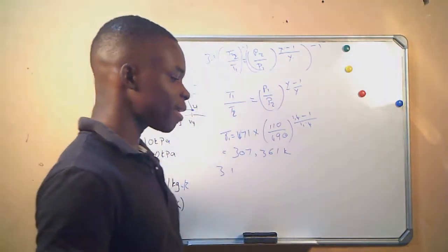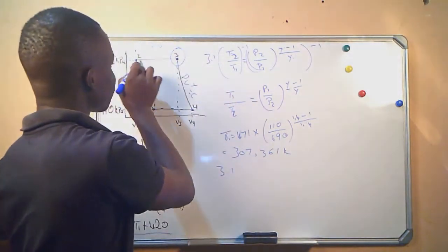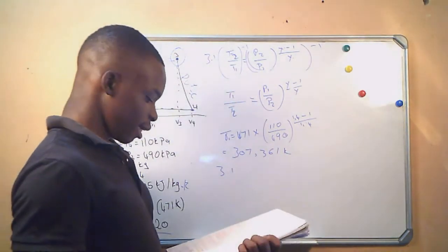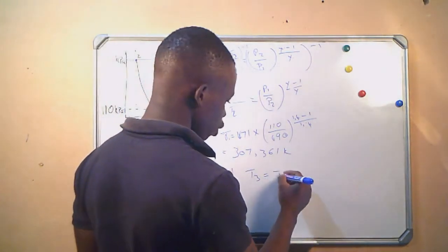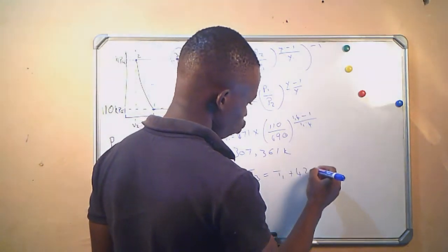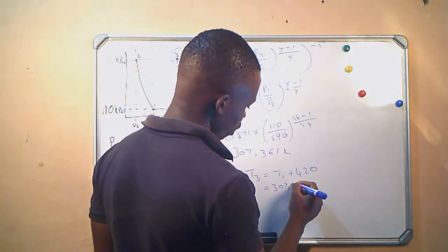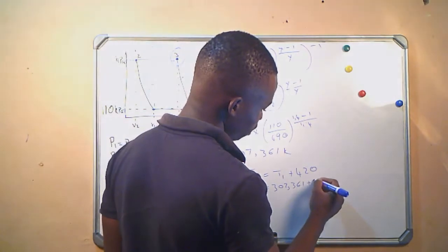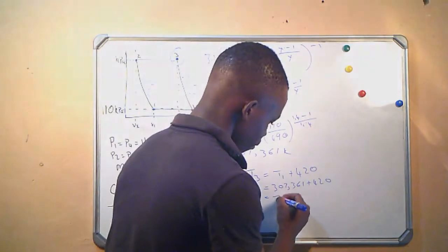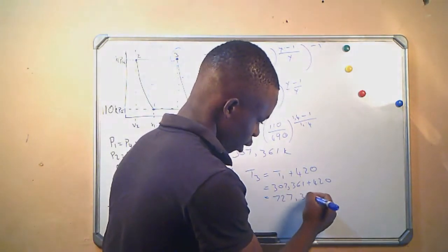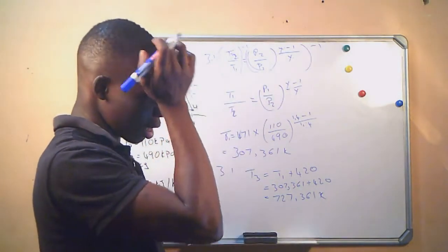Question 2: Calculate the absolute air temperature after constant pressure heat addition. We are looking for T3. We know T3 = T1 + 420 = 307.361 + 420 = 727.361 K.